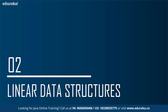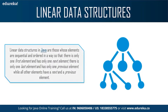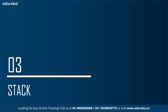We have two types of data structures: linear and hierarchical. Linear data structures are those whose elements are sequential and ordered such that there is only one first element with only one next element, and only one last element with only one previous element. All other elements have exactly one next and one previous element — there cannot be multiple previous or multiple next elements.